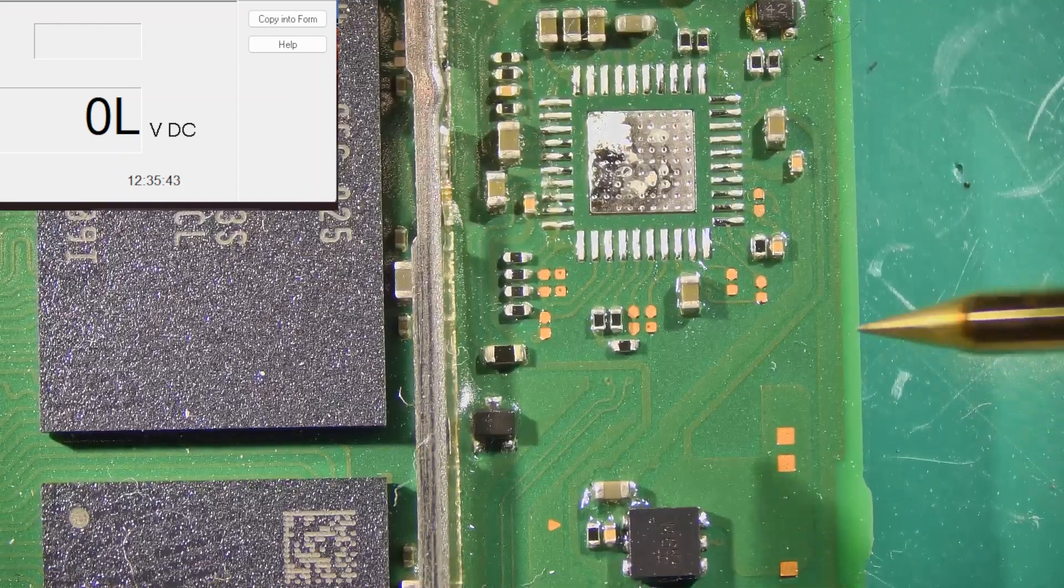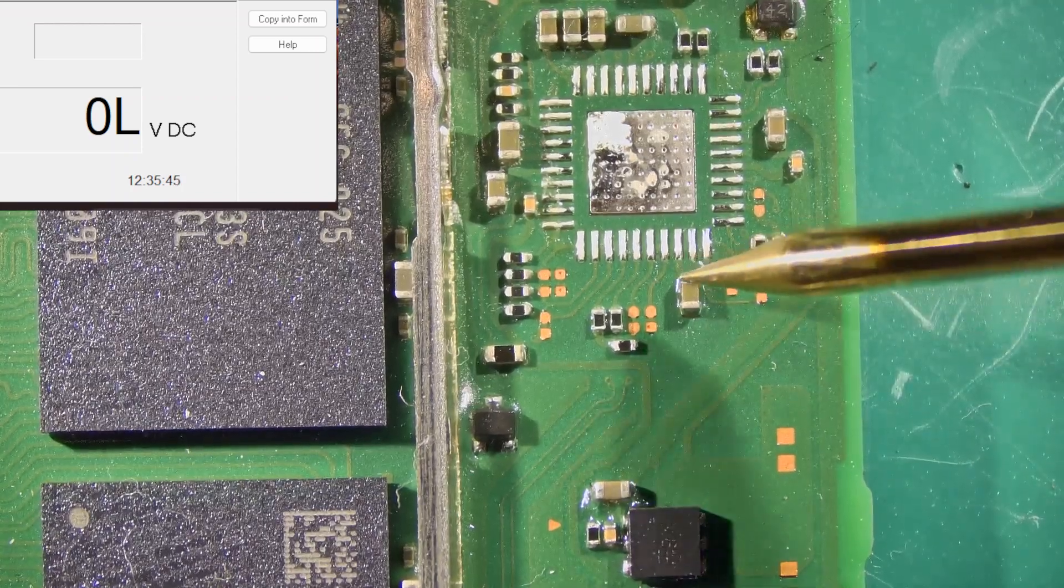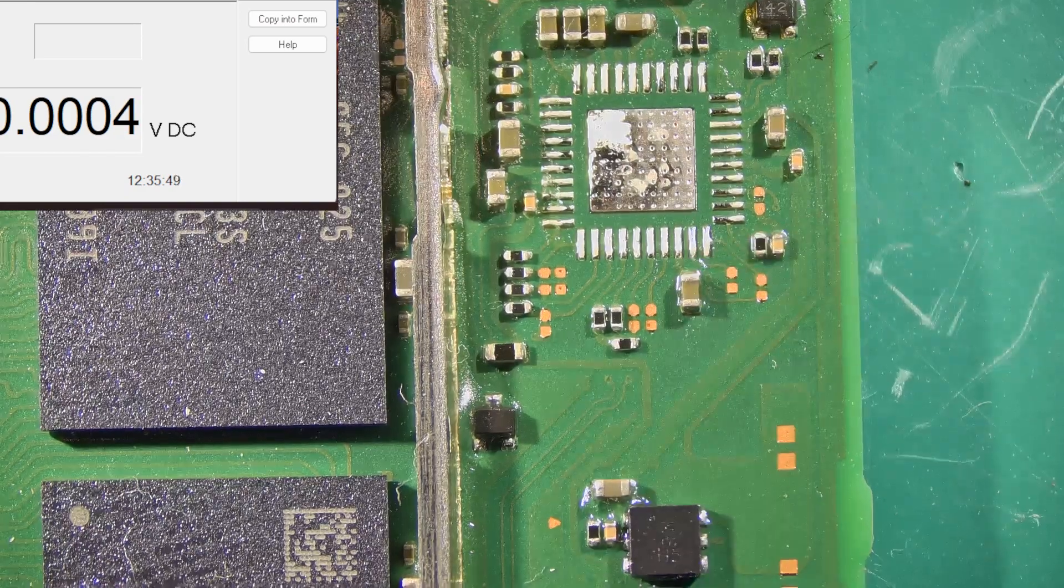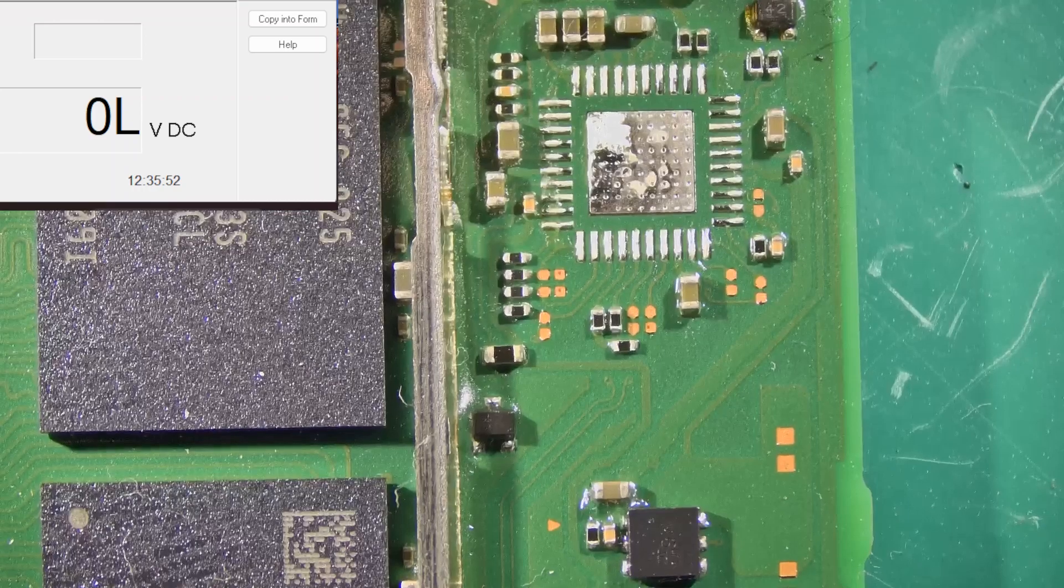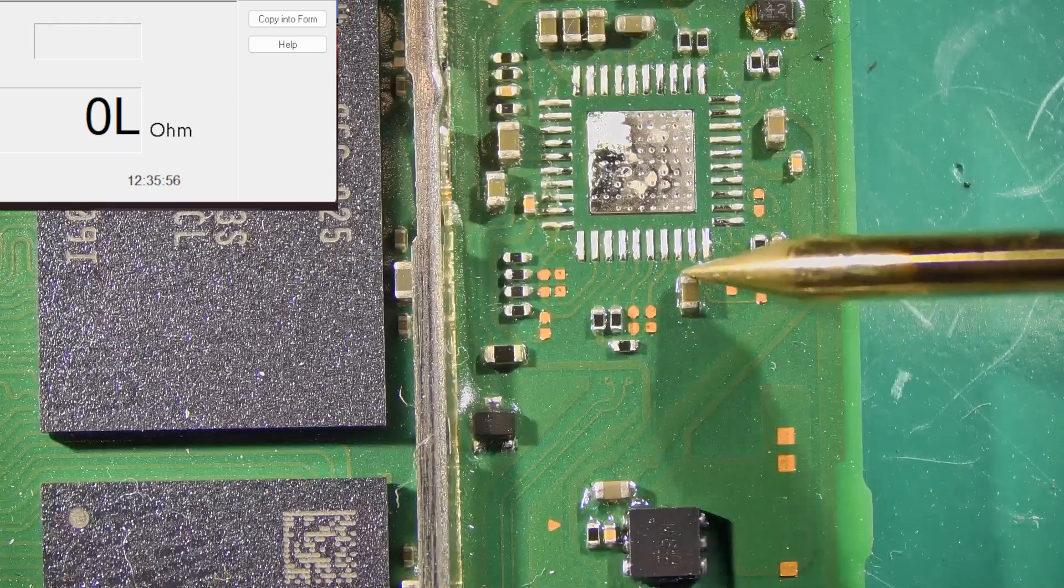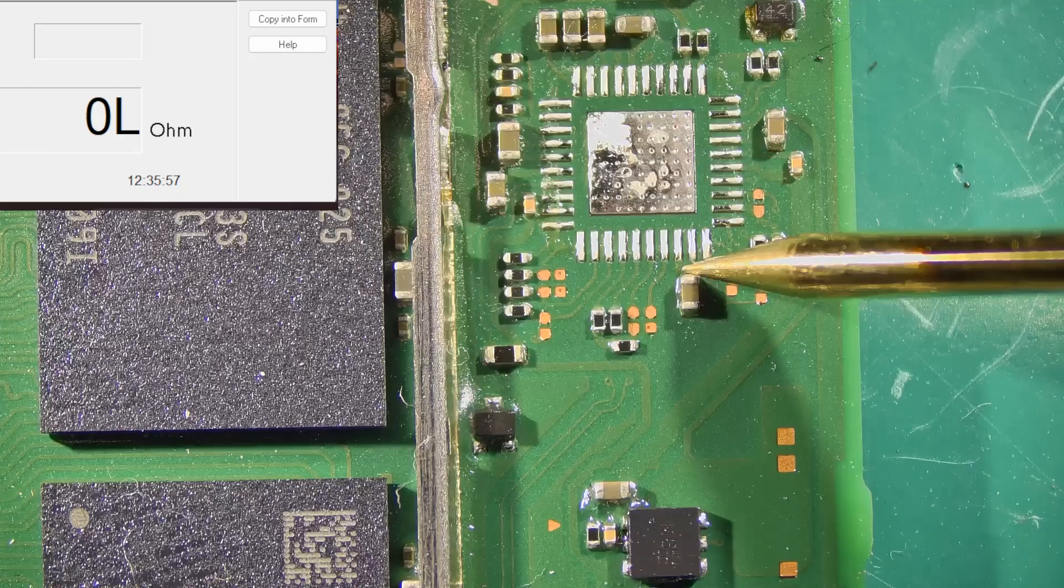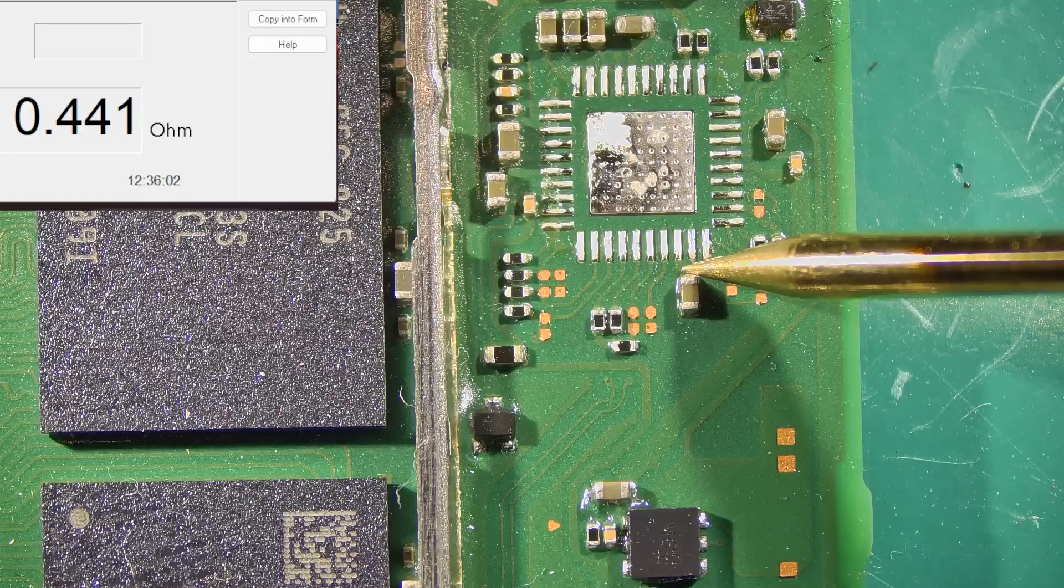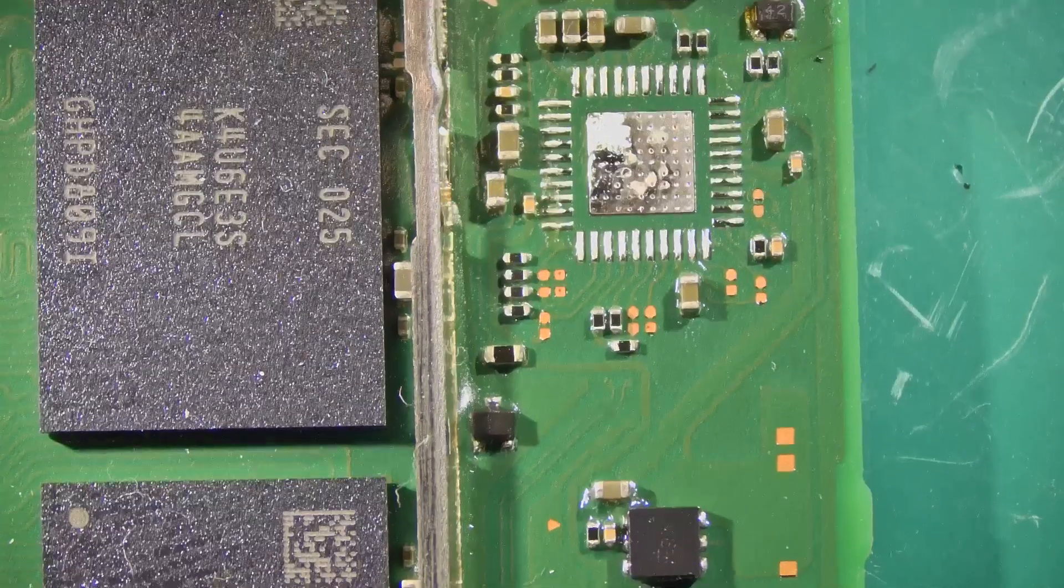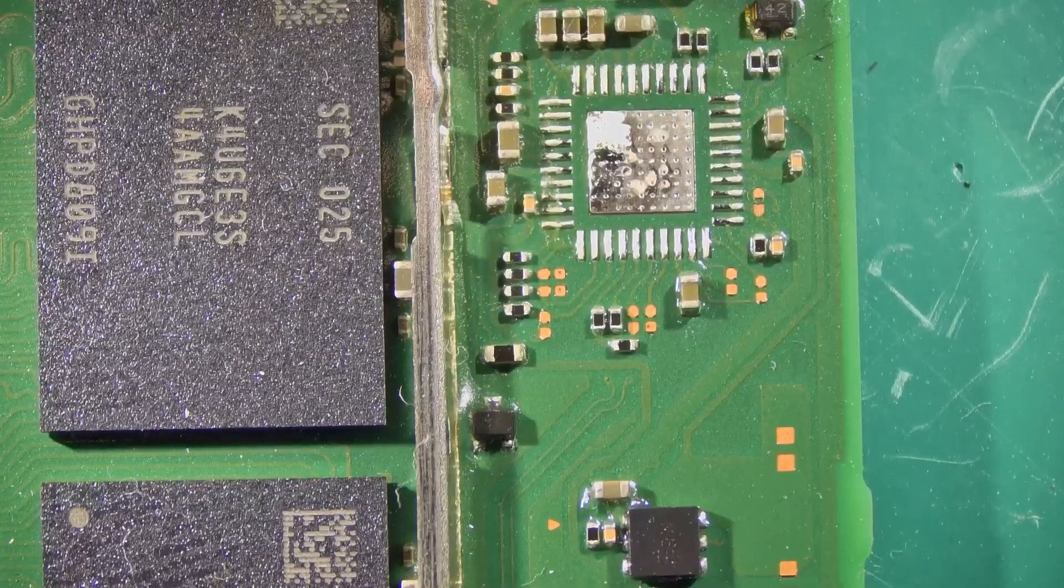We're going to take a couple measurements on there. You can see there's definitely a short there. We're going to flip over to ohms mode and take a measurement here. Measuring about 0.4 ohms. So we'll go ahead and inject voltage here and see what component gets hot.